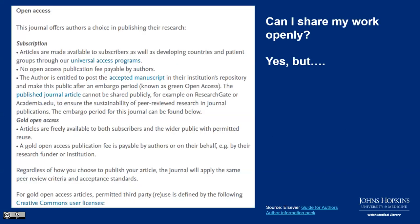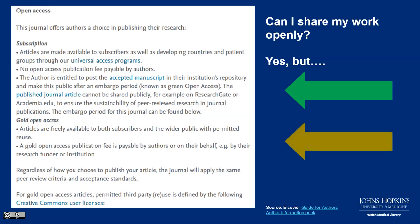Here's an example of a journal author guidelines page where these models are in play. Within a short description, you can see three publication models: green — if you publish in subscription, you can post the accepted manuscript in your institution's repository after an embargo period; gold open access; and hybrid. When a publisher describes gold open access, check whether they really mean hybrid, and whether that comes with a higher fee — potentially $5,000 for hybrid open access.